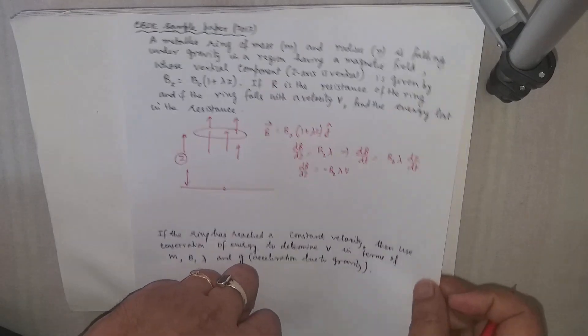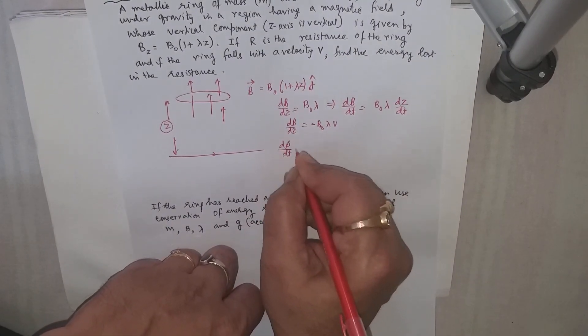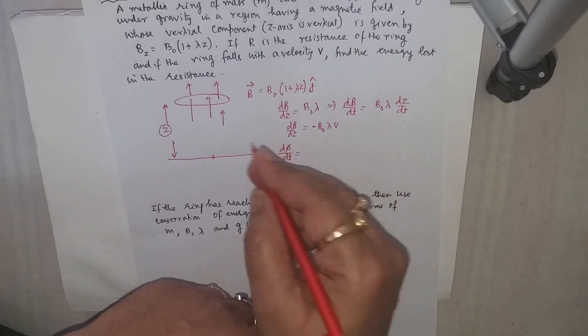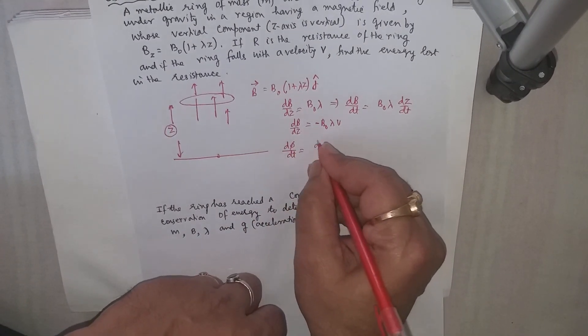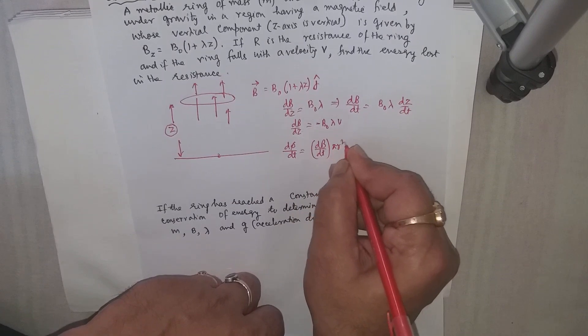Now the flux rate of change of flux through this falling ring will be equal to dB/dt multiplied by πr².